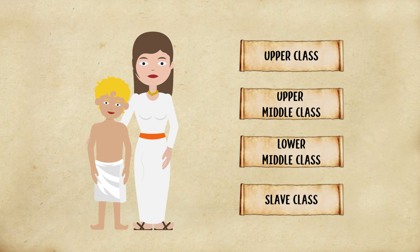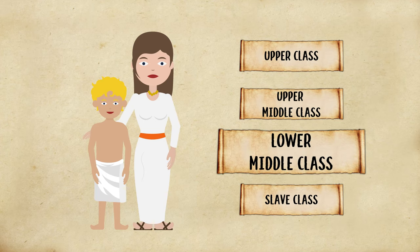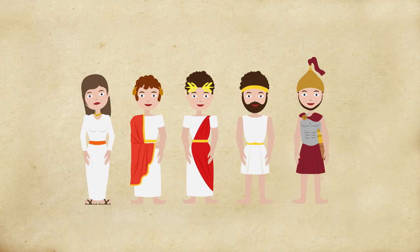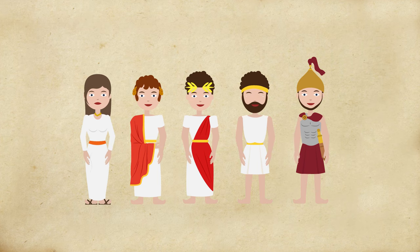That's right — Jocasta is a female, and Lycus is a young male, which means they're both considered lower middle class in ancient Greece. As you can see from the game, each social class in ancient Greece performed different roles in order to fit the needs of the civilization.